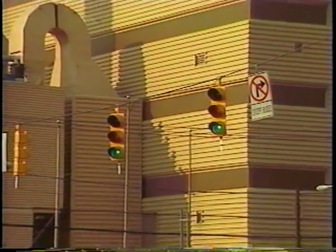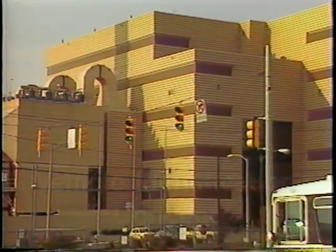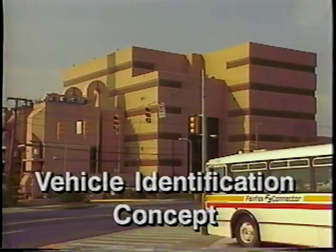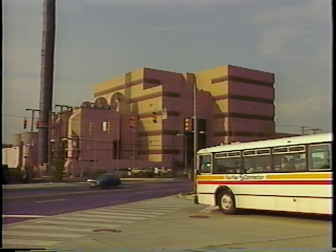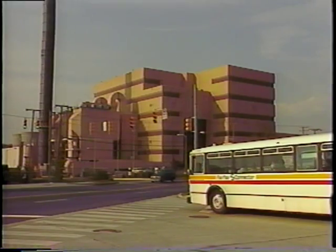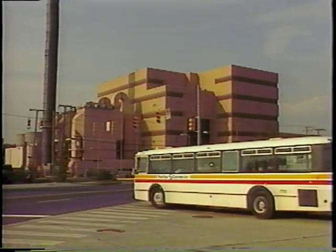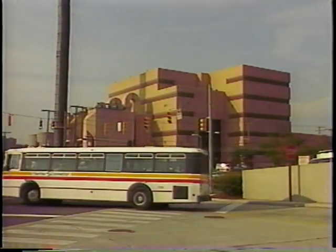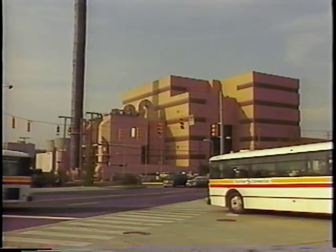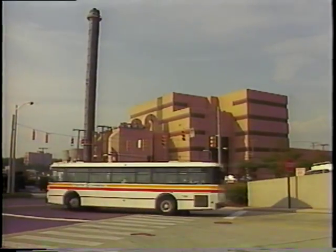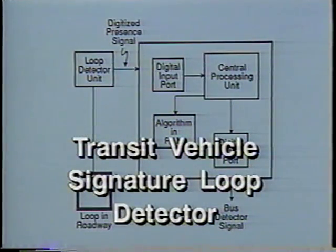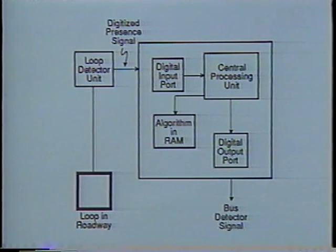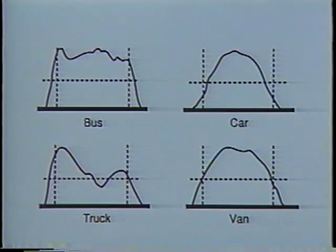The next detection system used for priority vehicles is the vehicle identification concept. The vehicle has a mounted transmitter to signal the controller, the roadway has a loop to pick up the signal, and the detector unit has a discriminator module. The system recognizes the vehicle and provides preemptive or priority control.